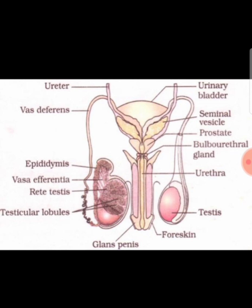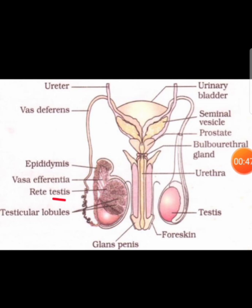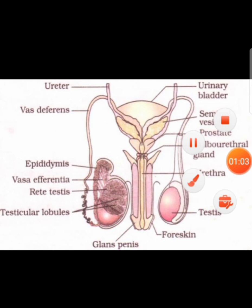Now you have the male reproductive structure diagram. The questions are going to be asked about the passage of sperm. Sperms are produced in the seminiferous tubules of the testes. After production, the pathway of the sperm is: from the seminiferous tubules, the sperms enter the rete testes, then vasa efferentia, then to the epididymis, and from the epididymis to the vas deferens.